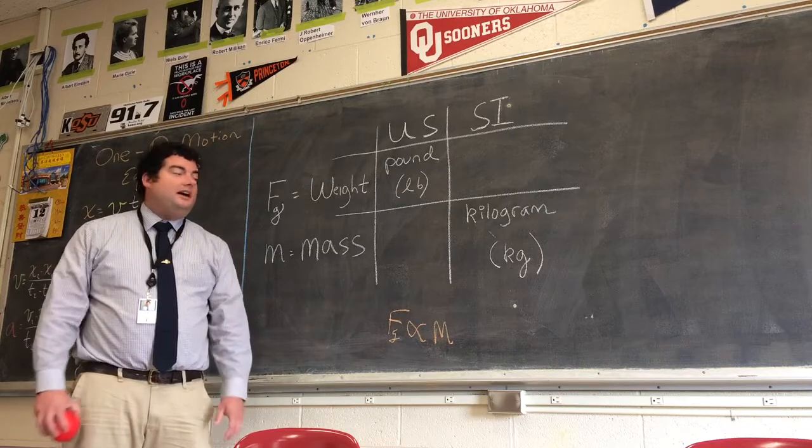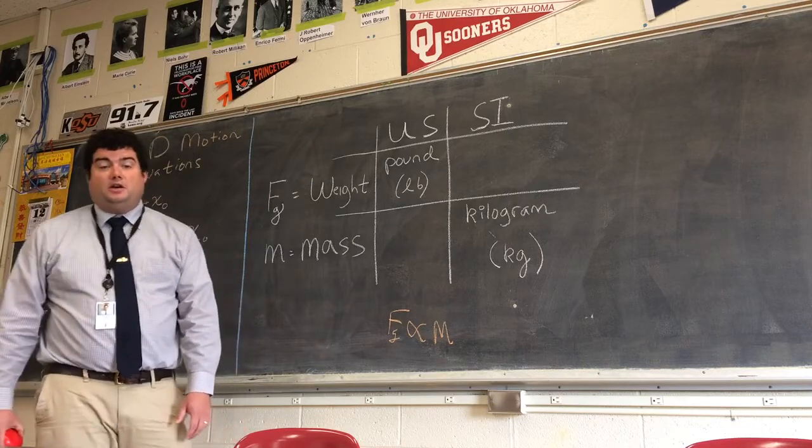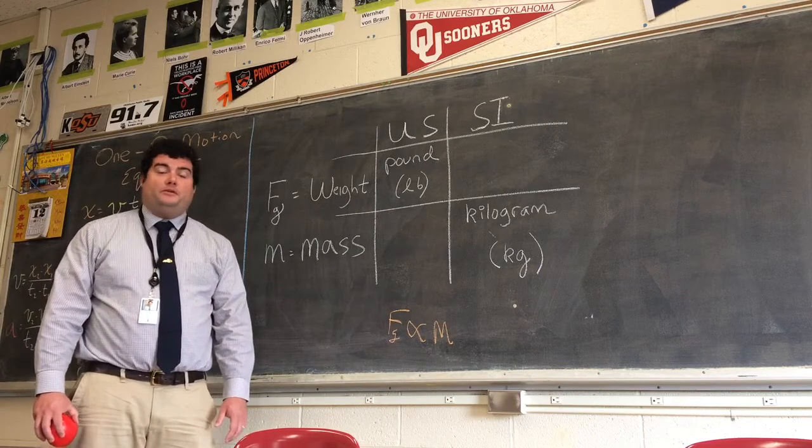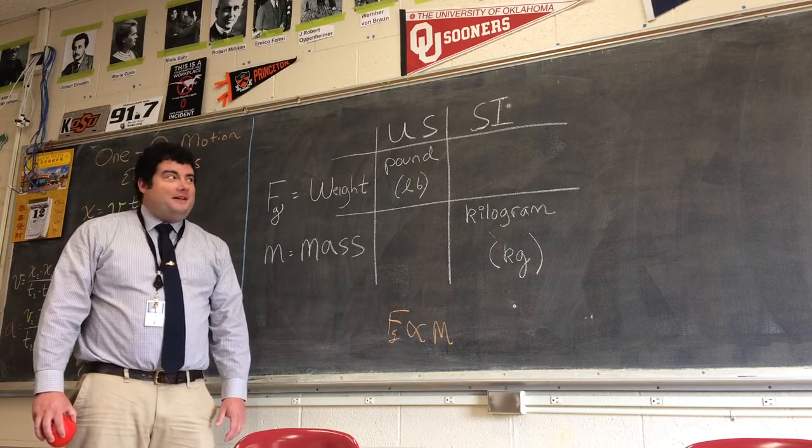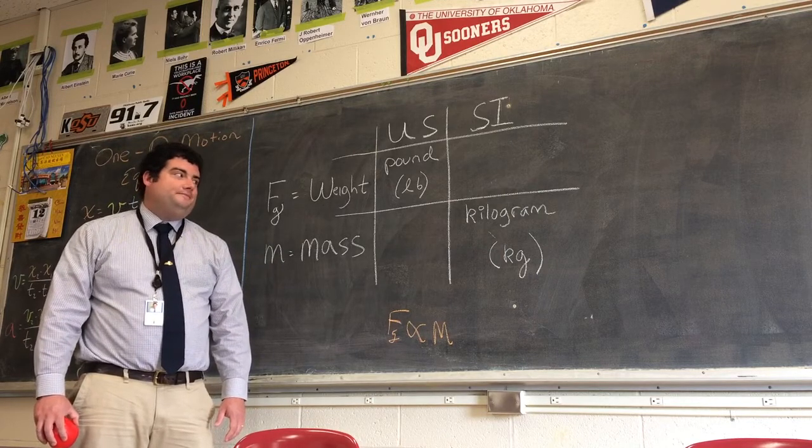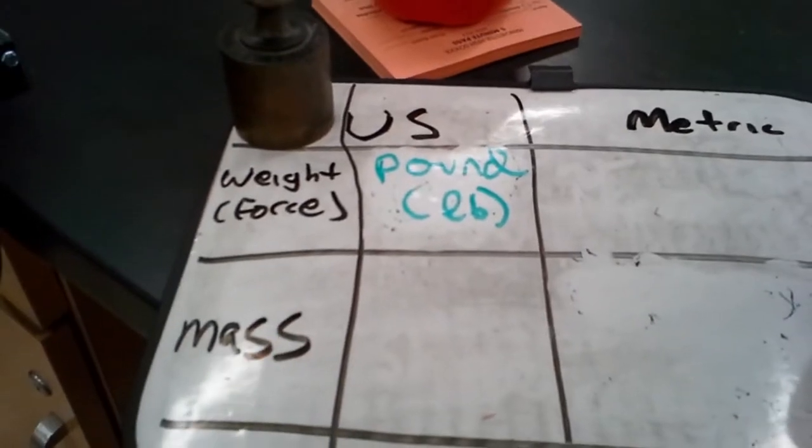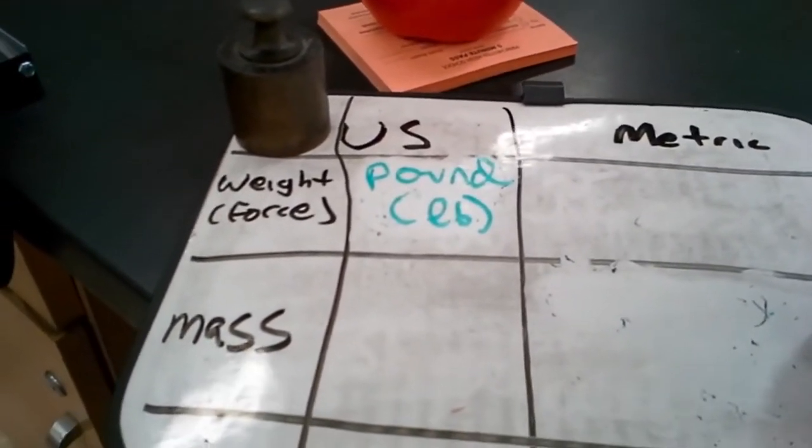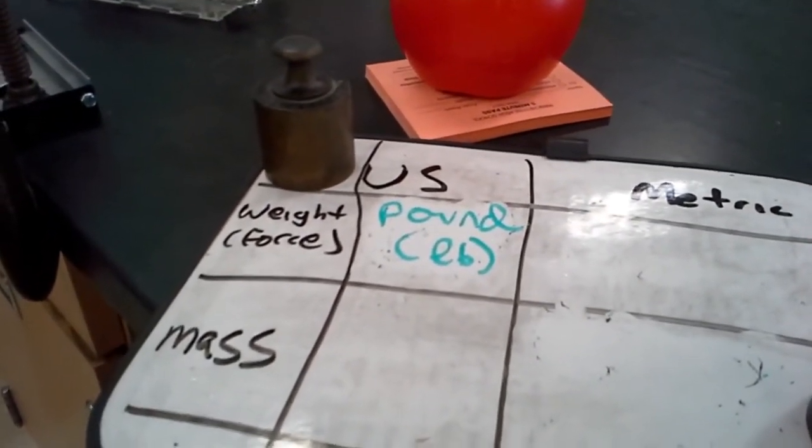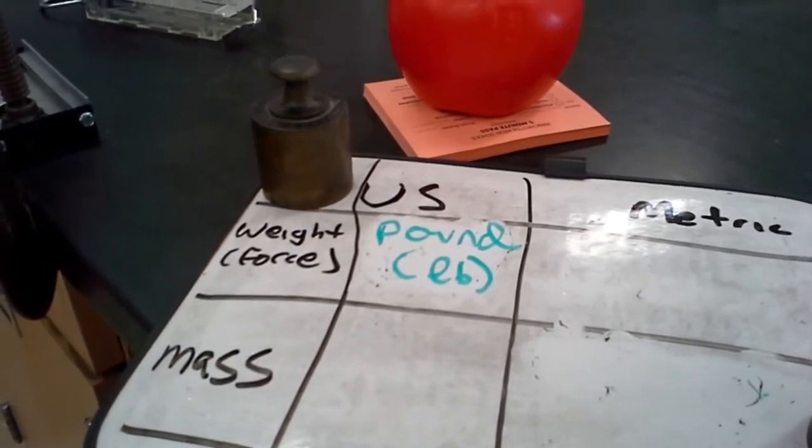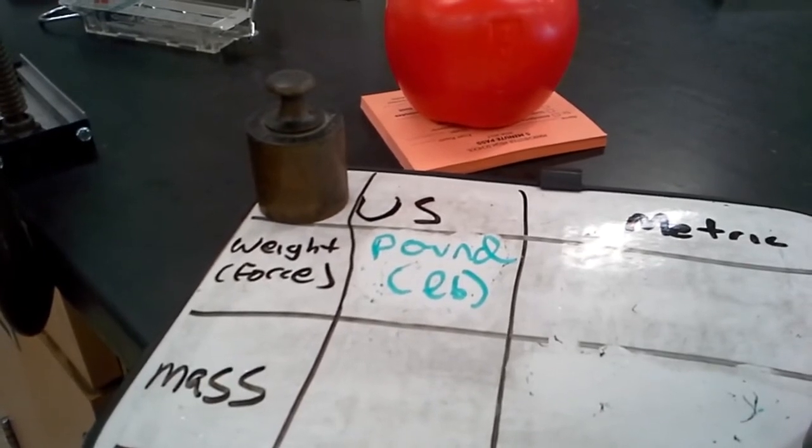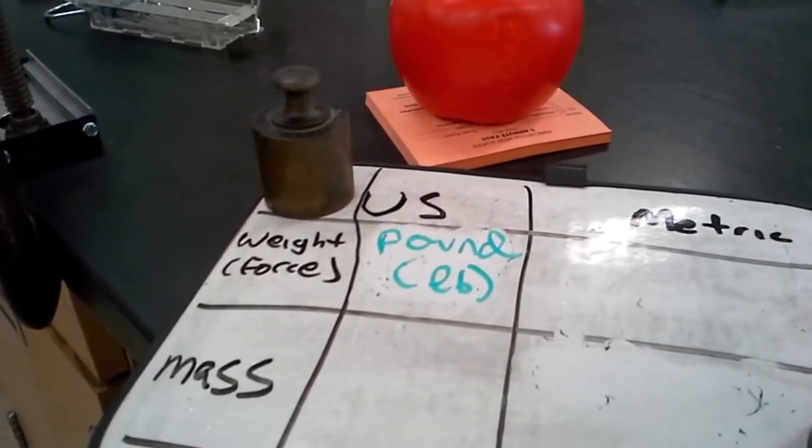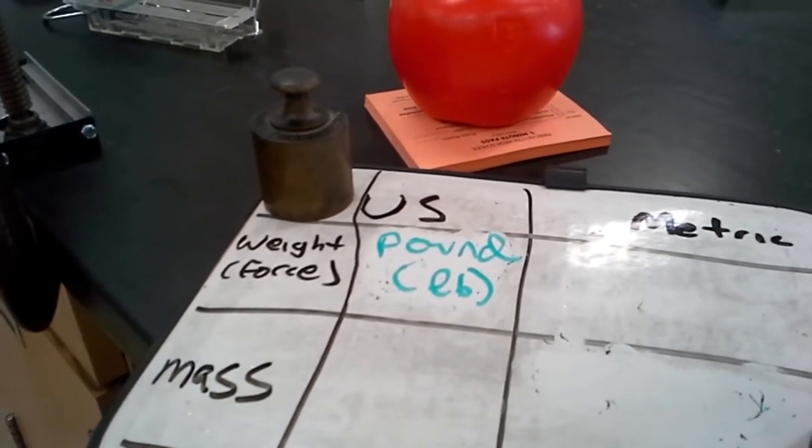I think you saw on there that there was pounds for measuring using US units and kilograms for measuring using metric units. The problem is those do not measure the same quantity. A pound is a measure of how much the earth is pulling on your bag of apples. If the earth pulls on it harder, you pay more. If it pulls on it less, you pay less. And that's a good way to sell apples. Because the more apples you've got, the more the earth is going to pull.